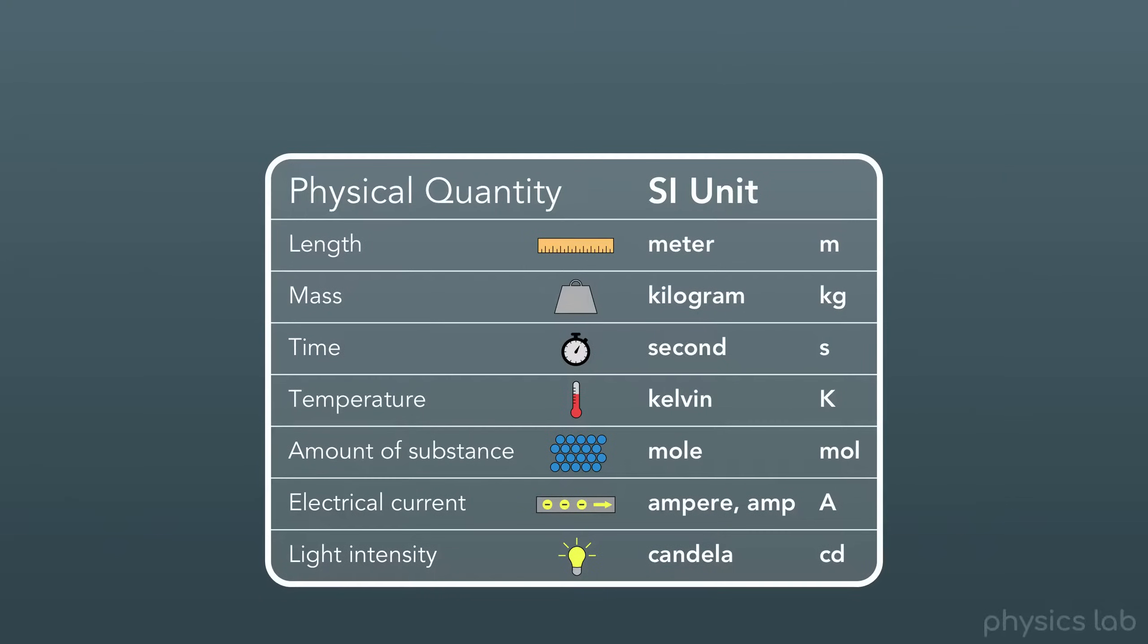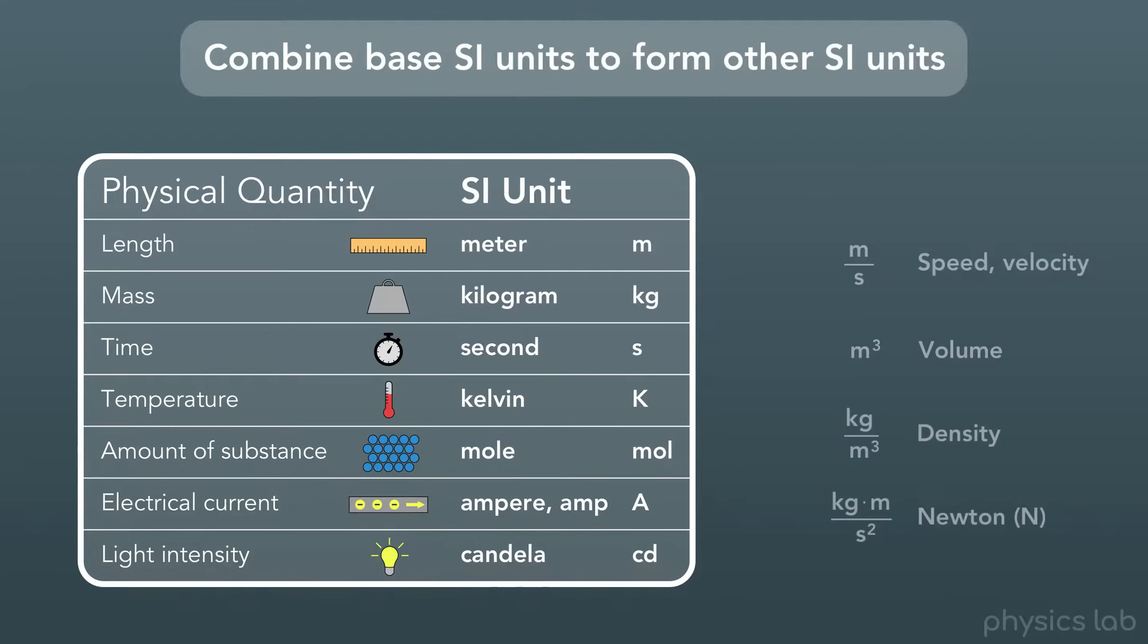So these are the base units, and just like we mentioned before, you can combine these base SI units to form other SI units. For example, the SI unit for speed or velocity is meters per second, combining the units for length and time.